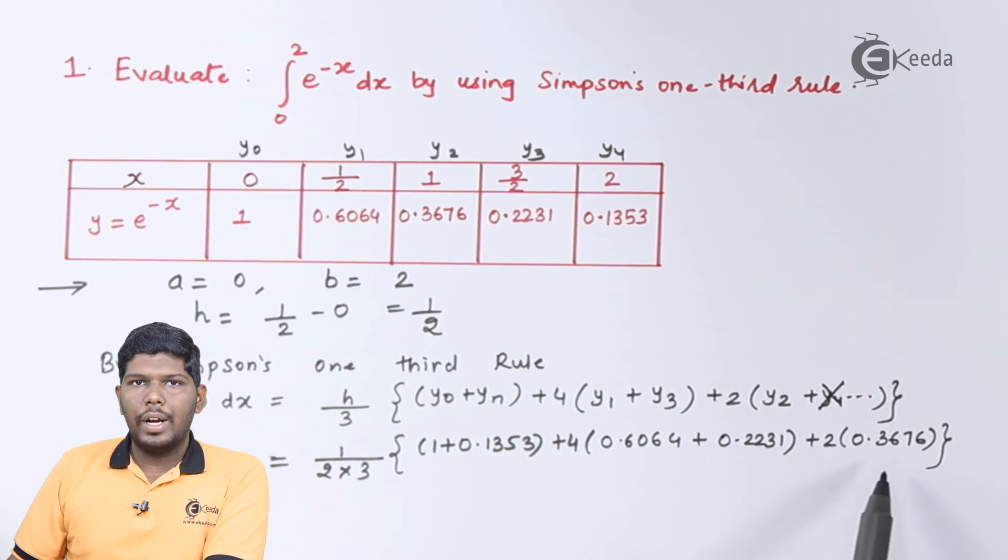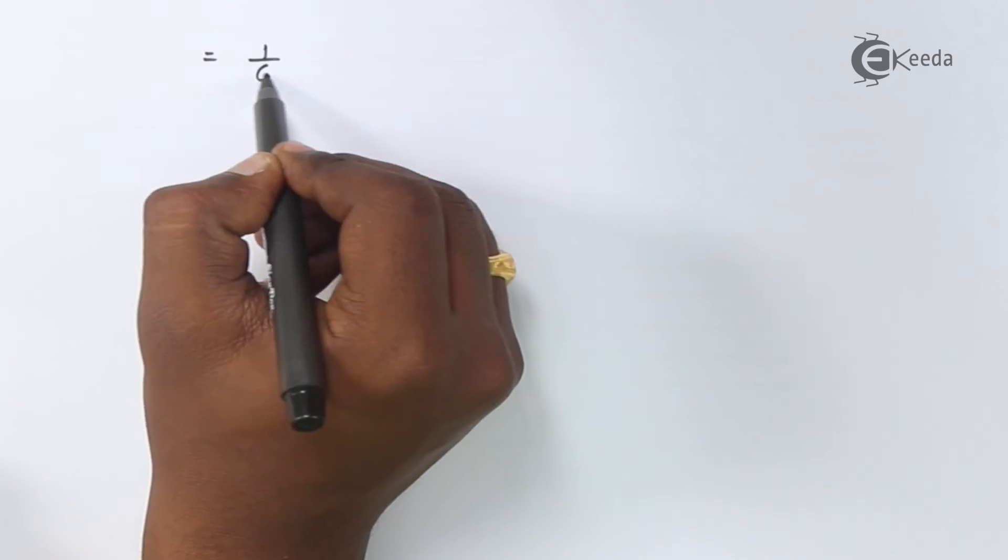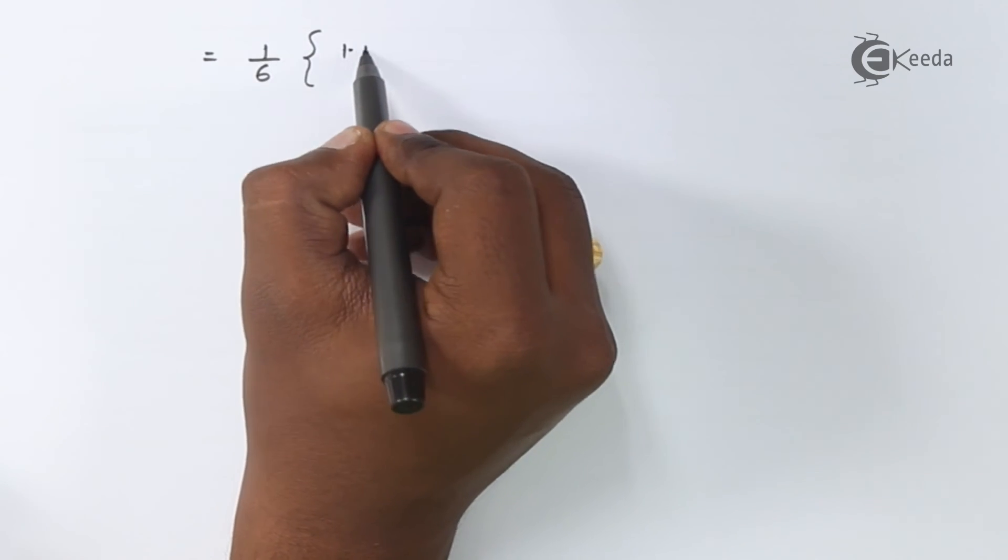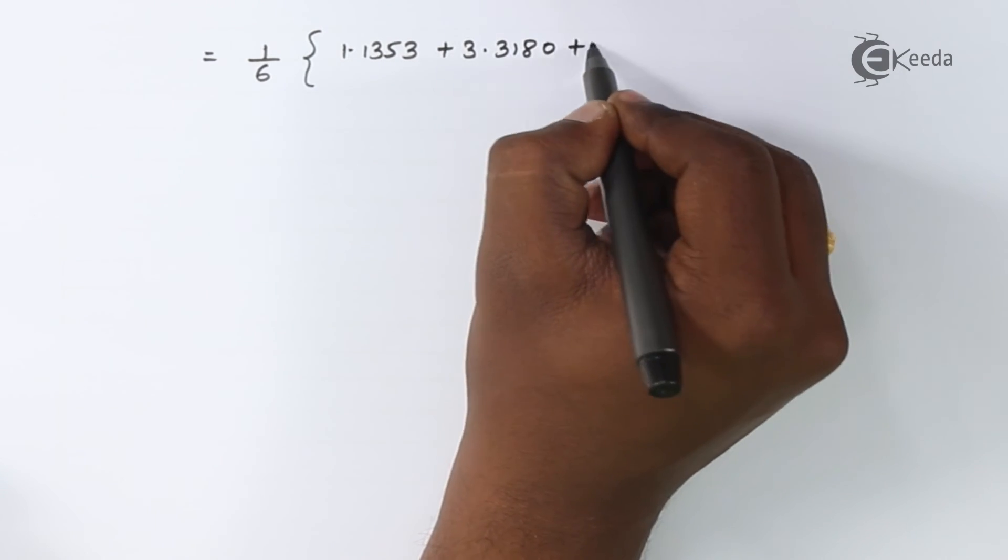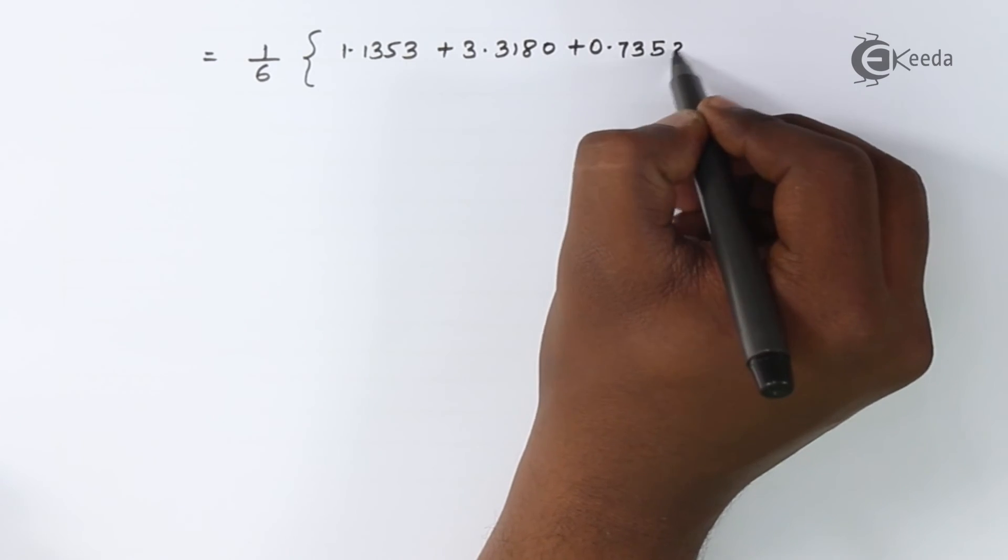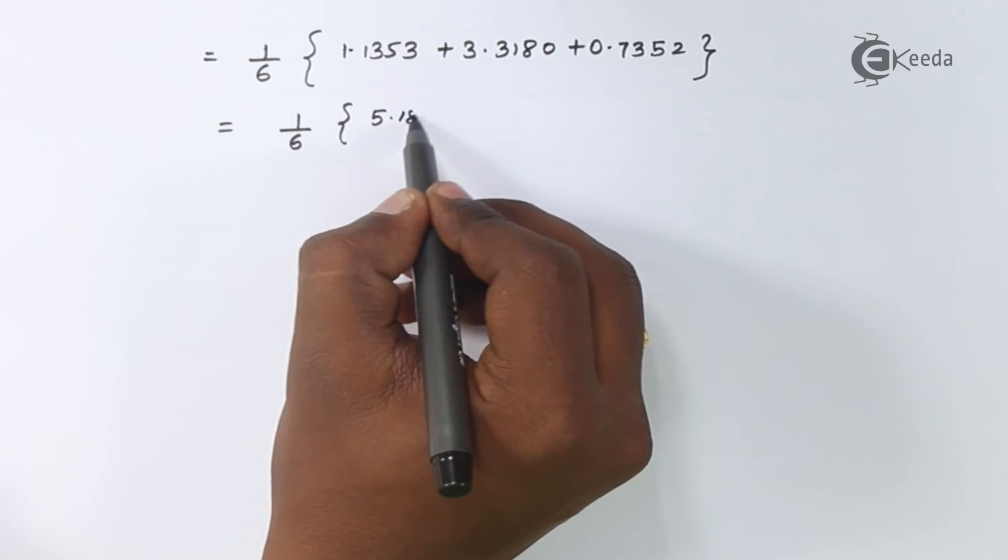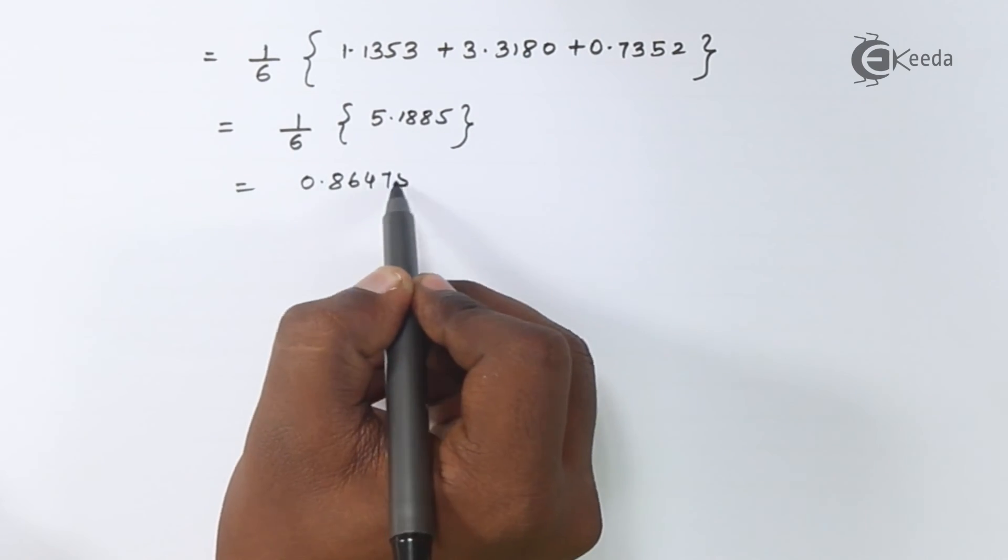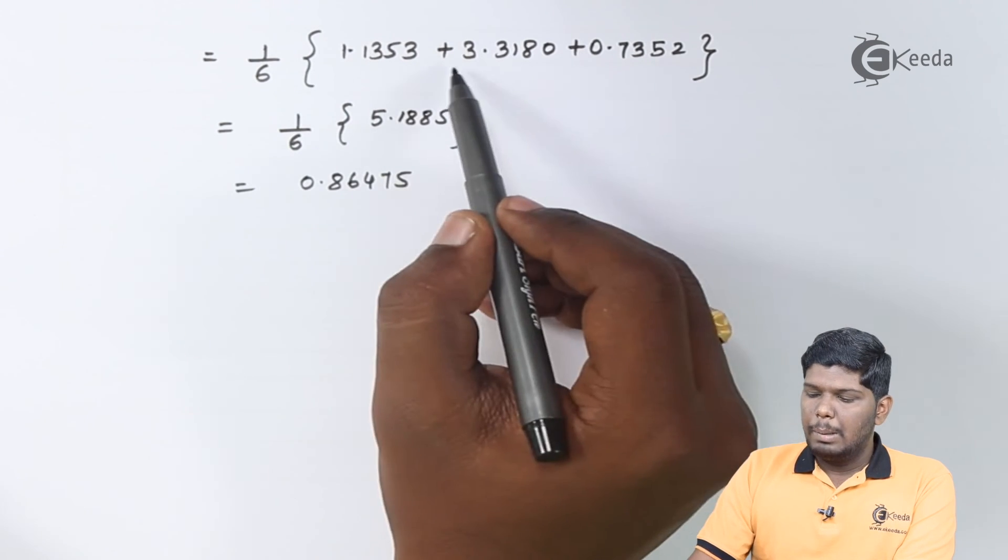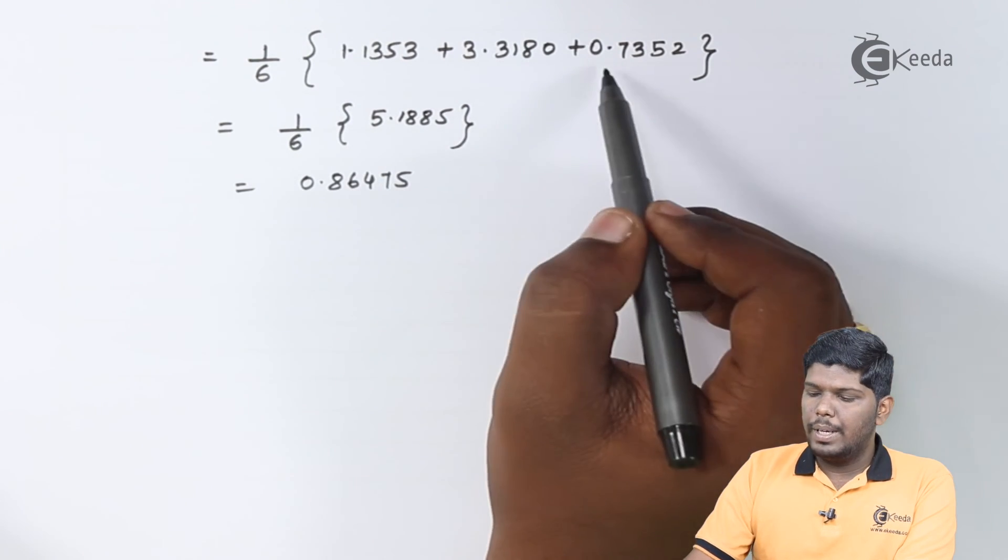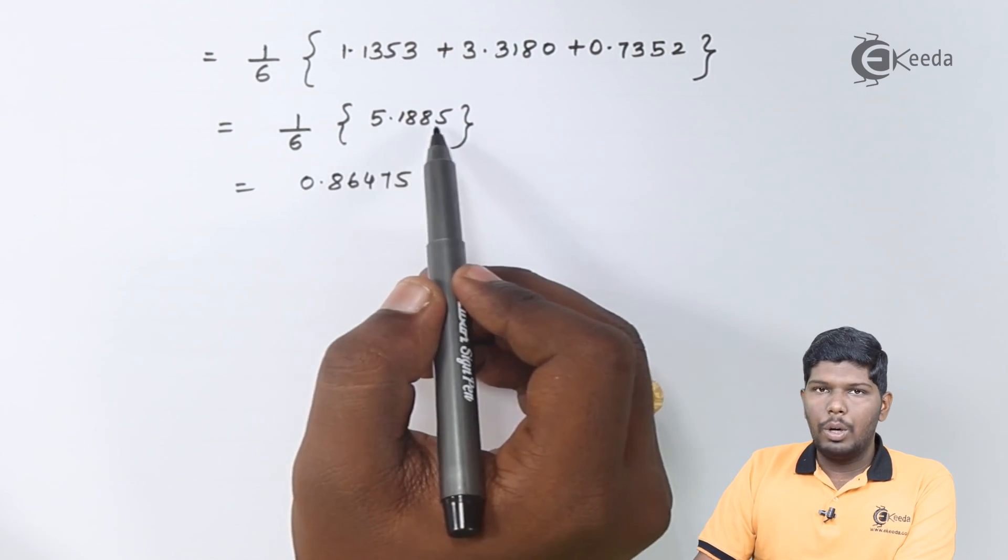Now let us solve these fractions. Let us solve all the three brackets. Therefore, we have 1/6 into 1.1353 plus 3.3180 plus 0.7352. On adding these three terms, we have 5.1885.